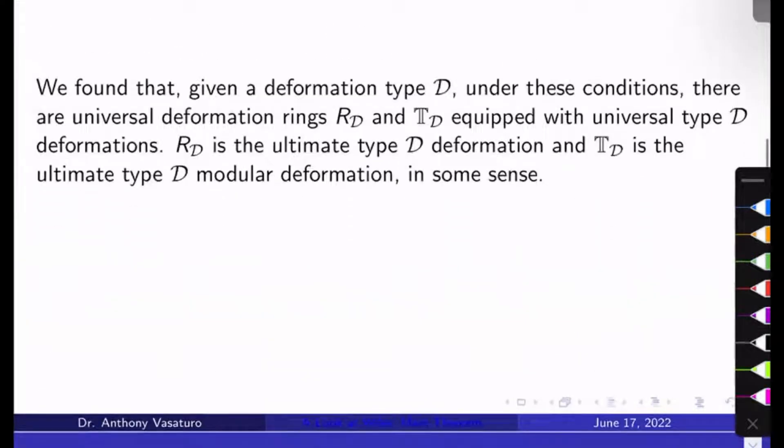We also saw last video that a deformation type is like a list of conditions we want to impose on certain deformations of rho-naught. If I give you a deformation type D, then under conditions A through D above, there are universal deformation rings RD and TD, each equipped with a universal type D deformation. RD corresponds to the ultimate or diagrammatically speaking biggest type D deformation of rho-naught, and TD corresponds to the ultimate type D modular deformation of rho-naught.